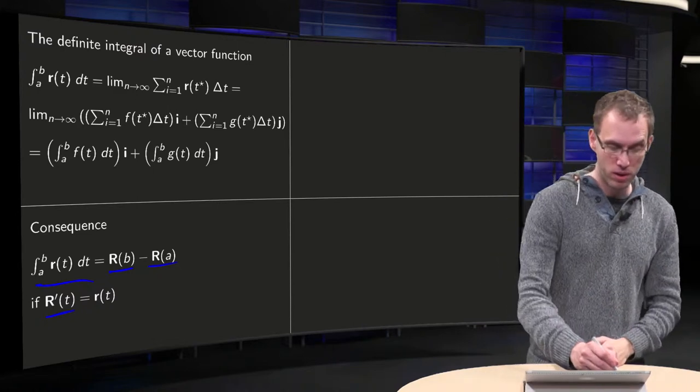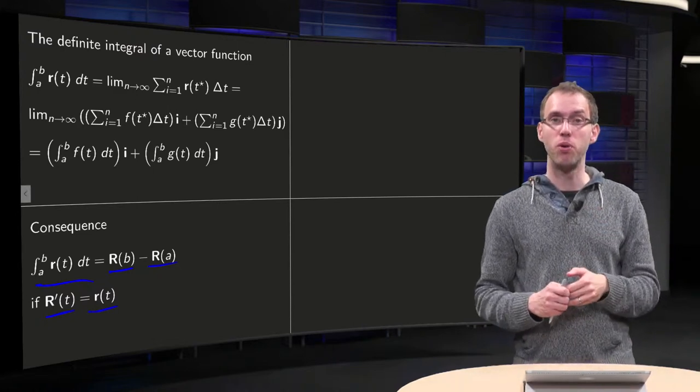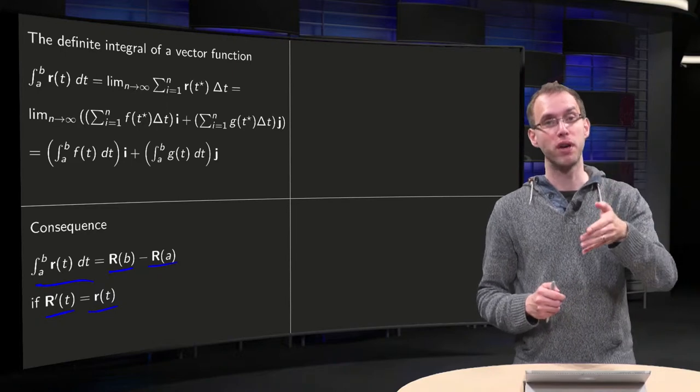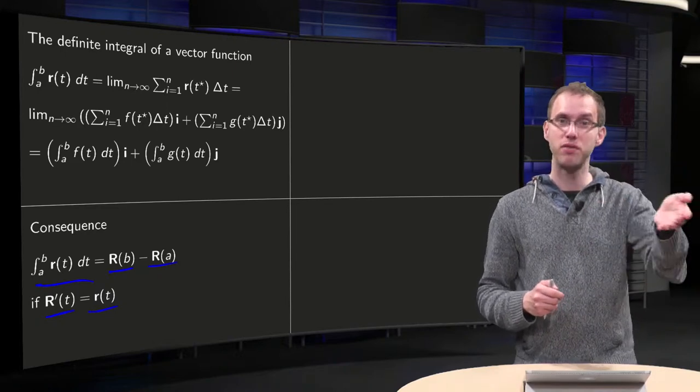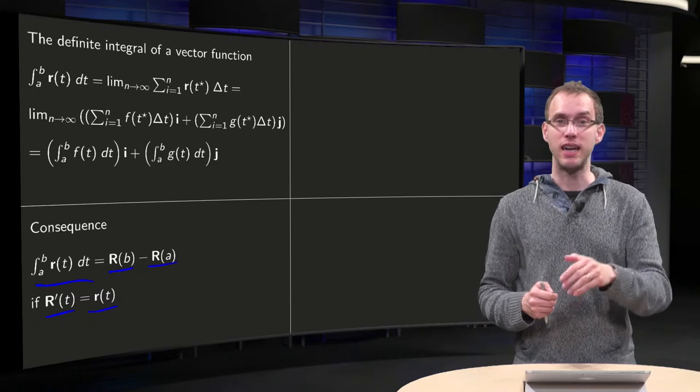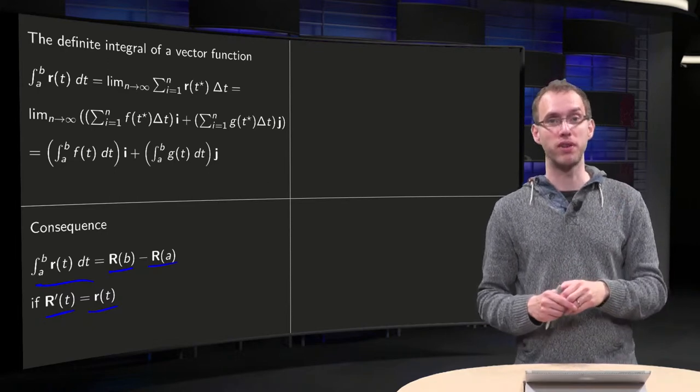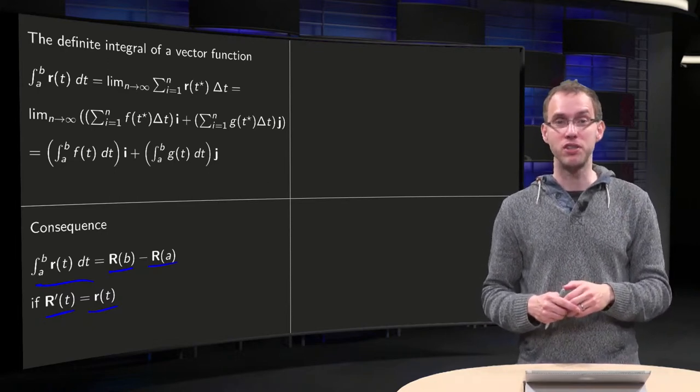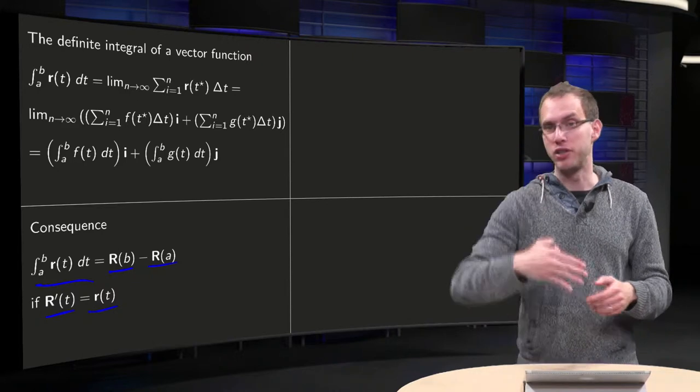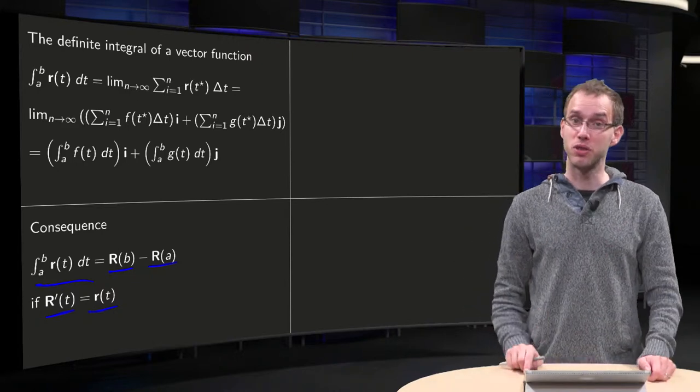So R prime has to be equal to r, so the first component of R contains the antiderivative of f, and the second component the antiderivative of g, and so on, if your vector function contains more components.